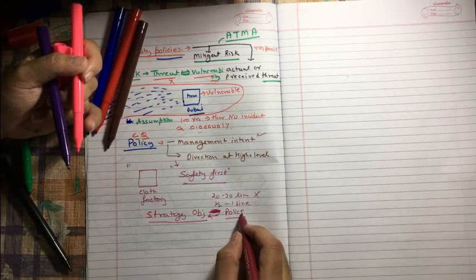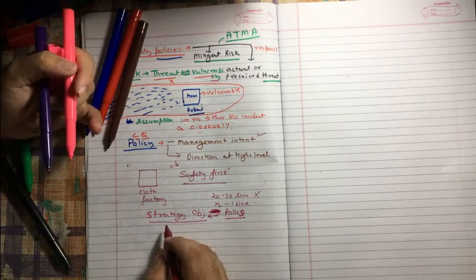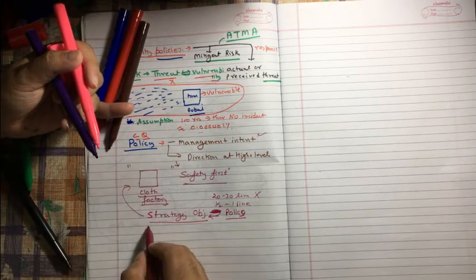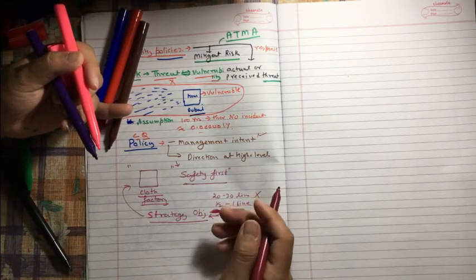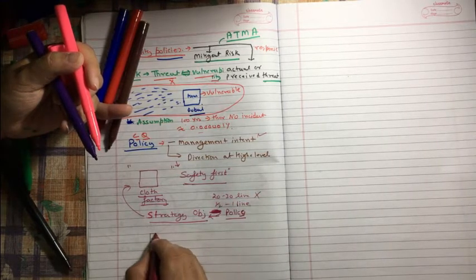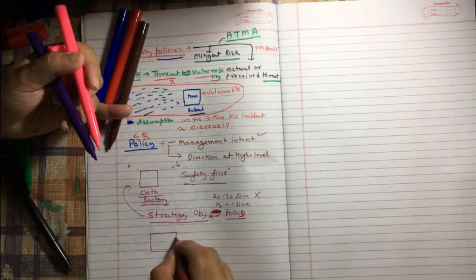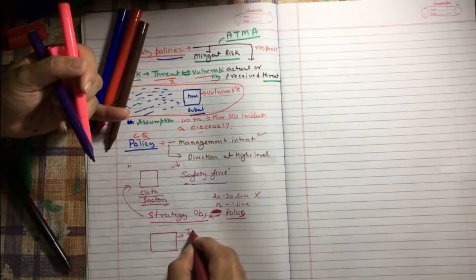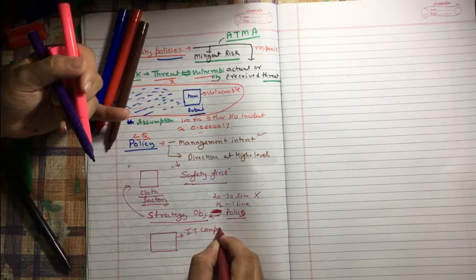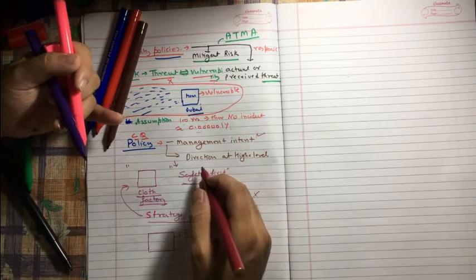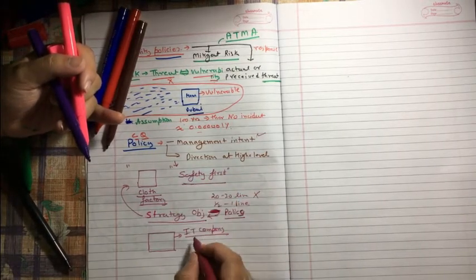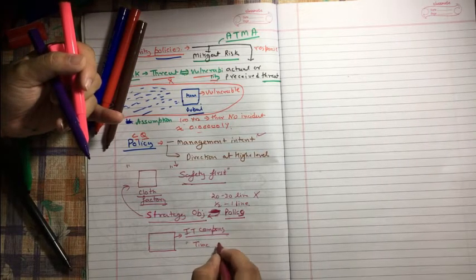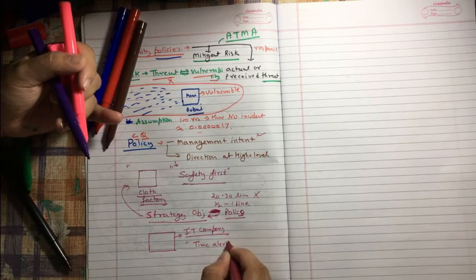You know what, let me try to give an example. P-O-L-I-C-Y. In a clothes factory, there is a strategy and based on that strategy I am saying safety first. But let's say I have another example where I am working in an IT company, where safety first is one of the good policies, but I am saying there is another policy - let's say 'time alert'. For example, there is a policy on time alert.